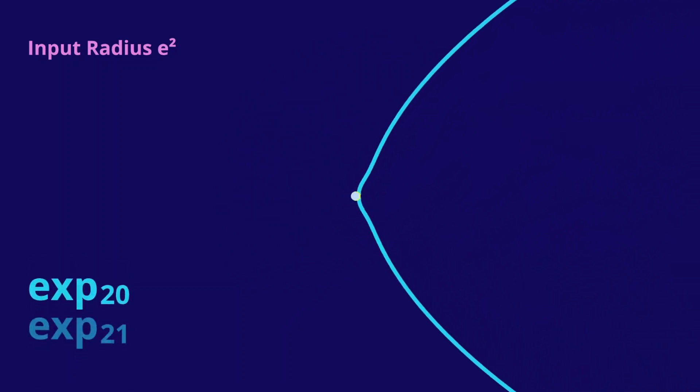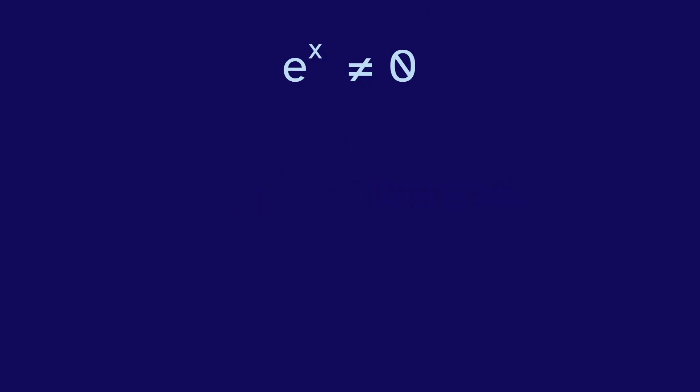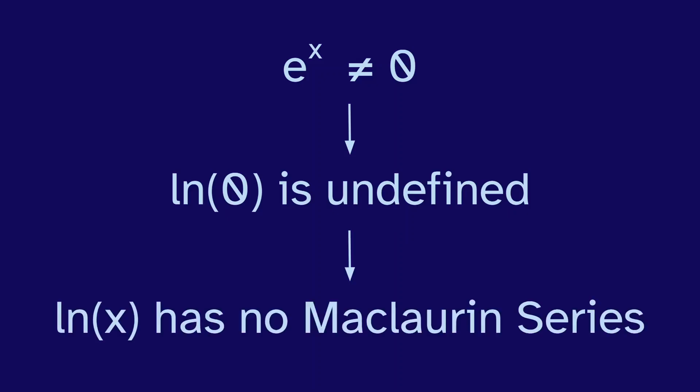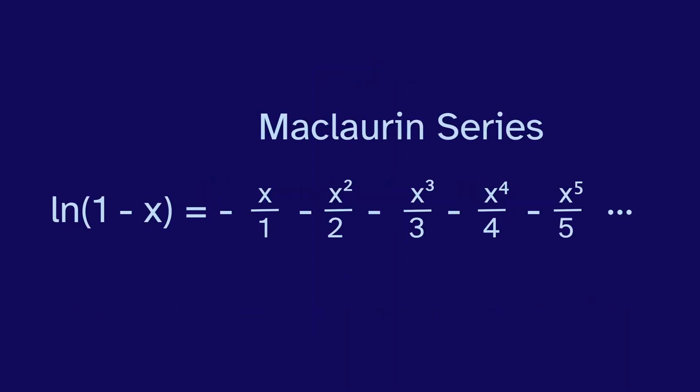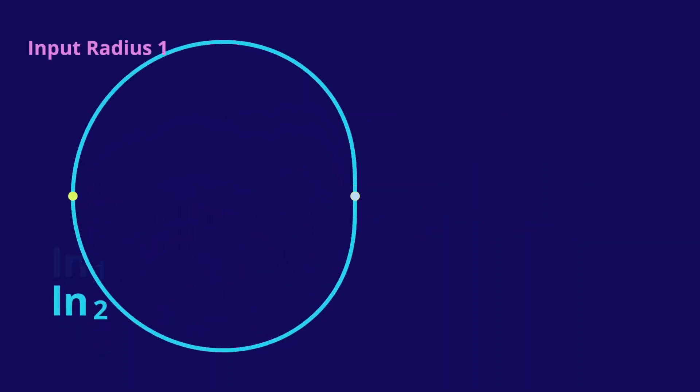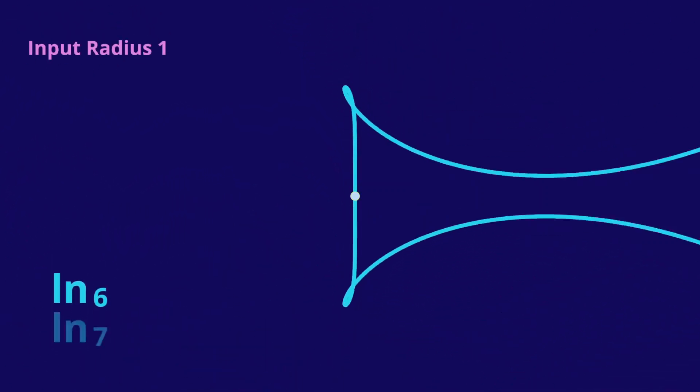Because the exponential function never outputs 0, its inverse, the natural log, is undefined at 0, so it doesn't have a Maclaurin series. But there is one for the natural log of 1 minus x, so we can use this if we adjust the input. And the animation for this keeps repeating the same shape.